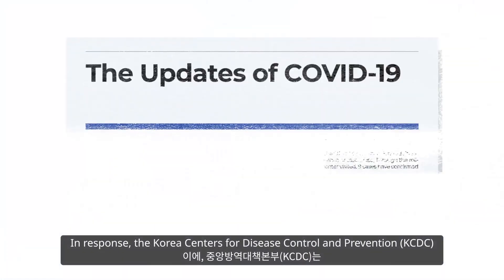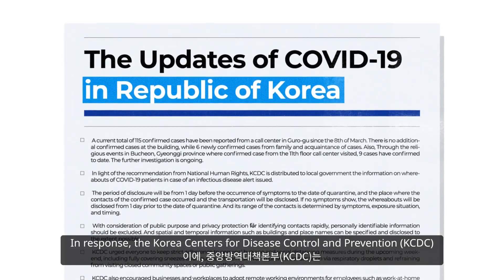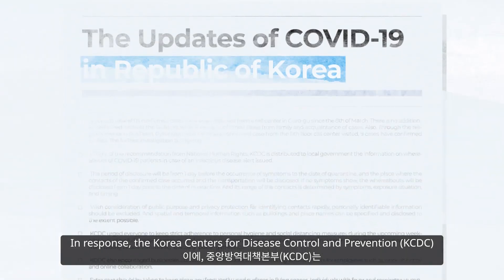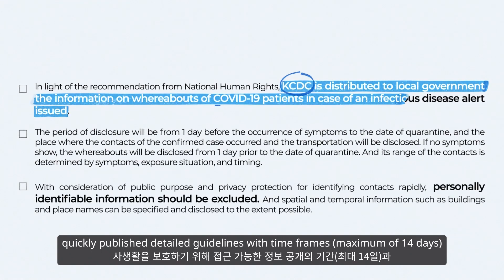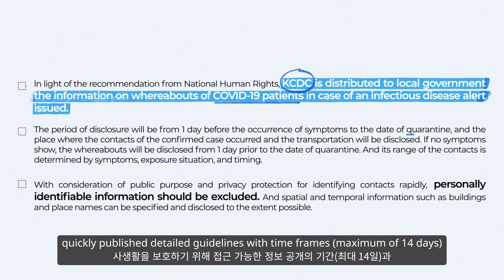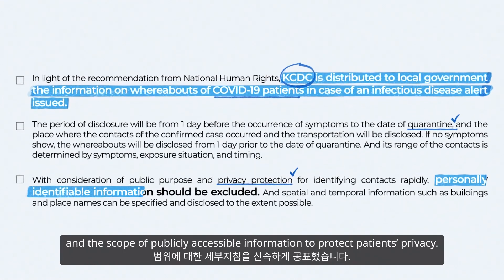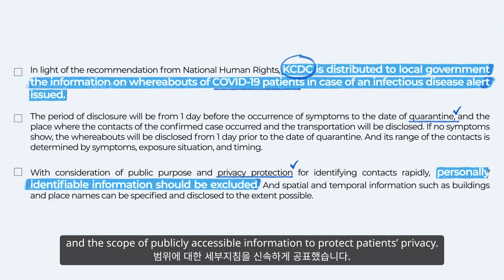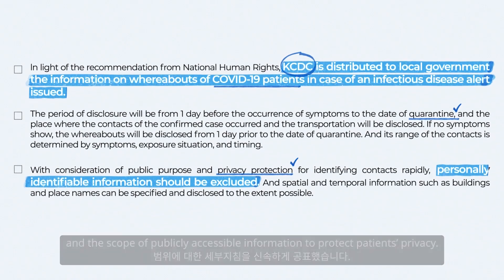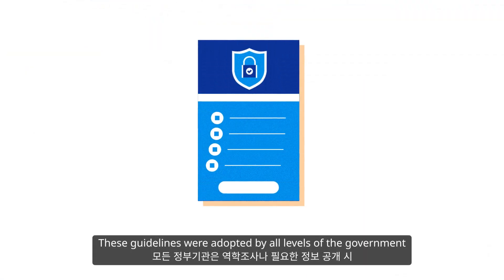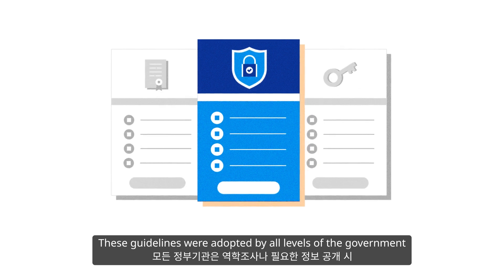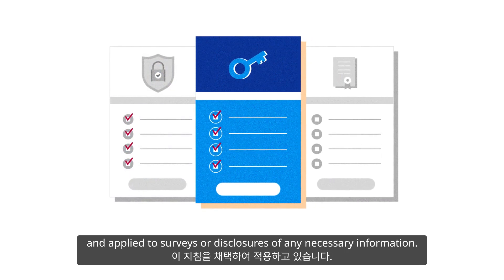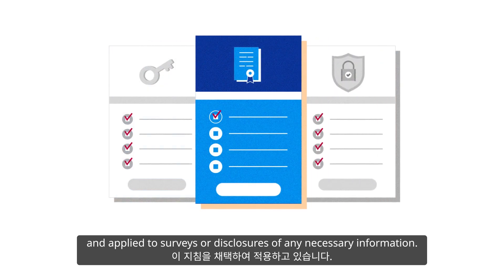In response, the Korea Centers for Disease Control and Prevention (KCDC) quickly published detailed guidelines with timeframes and the scope of publicly accessible information to protect patients' privacy. These guidelines were adopted by all levels of the government and applied to surveys or disclosures of any necessary information.